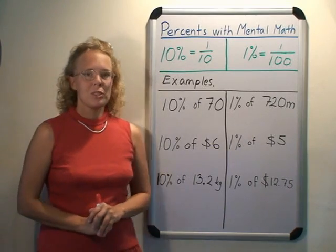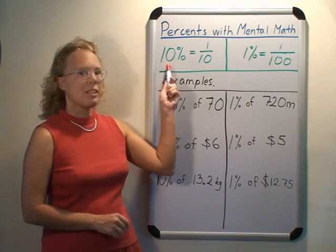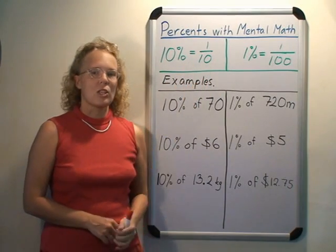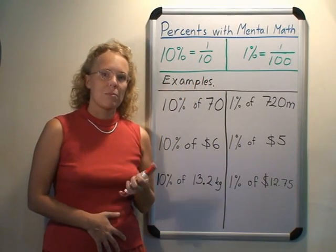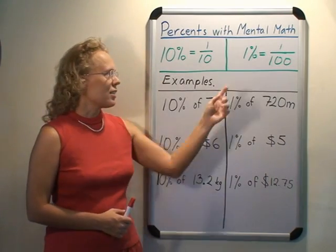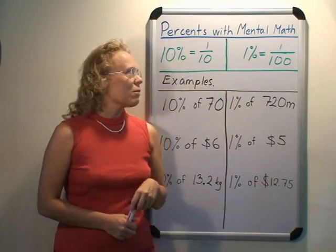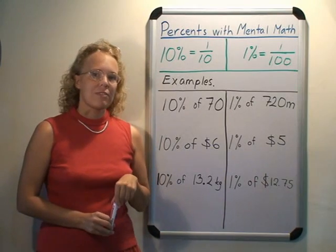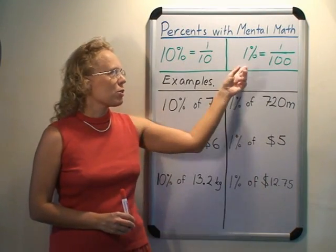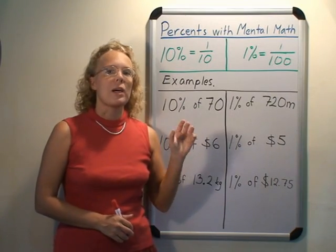We will use two starting points mainly: 10% is the same as 1/10, so we can find 10% of any number by dividing by 10. And 1% is 1/100, which is the definition of percent, so 1% of any number is the same as dividing that number by 100.